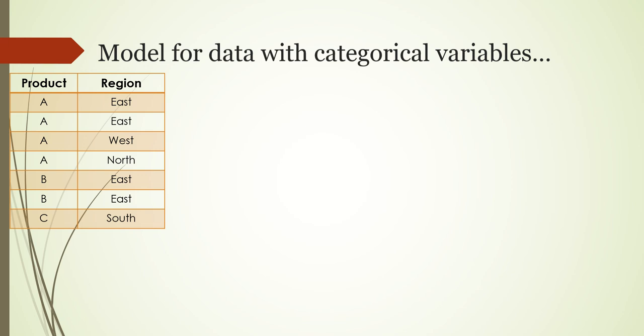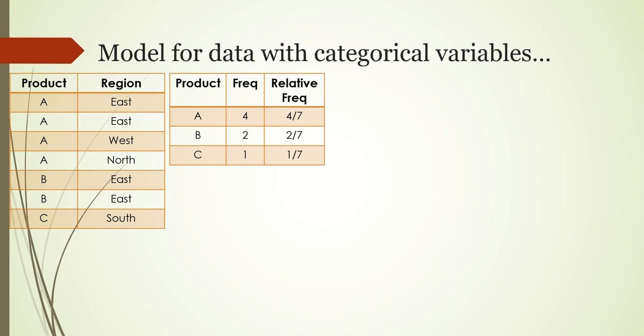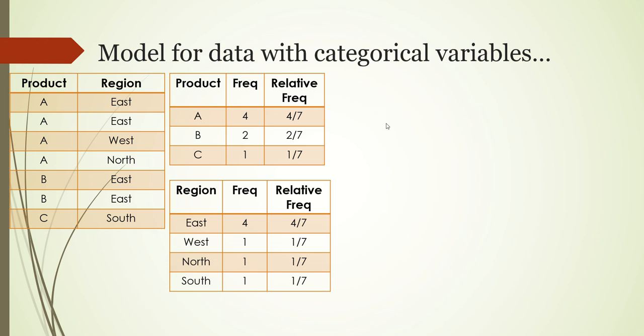We take product, which is the first categorical column, and identify total count of records against each individual value. Then we identify the relative frequency. For the second categorical column, region, we do the same thing - identify frequency against each individual value of region, then identify relative frequency.